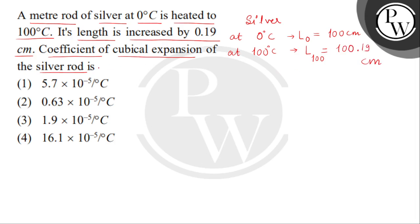So we have to find what will be the coefficient of cubical expansion for silver rod. Children, we will find first the coefficient of linear expansion. Then when we get value, we can find gamma from 3 times alpha.